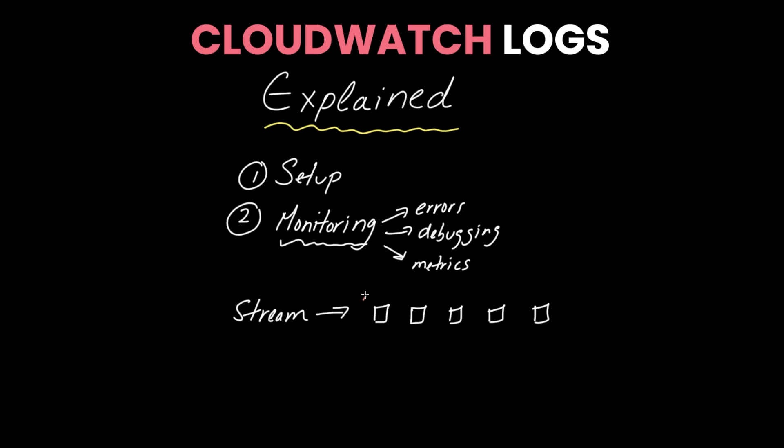This is the log stream for one particular instance. So say this is like EC2 instance one, and then we have a different EC2 instance, and then it's outputting its metrics onto its local machine into its log file. And it's just appending it, so on and so forth.